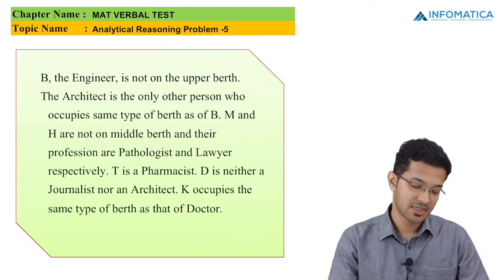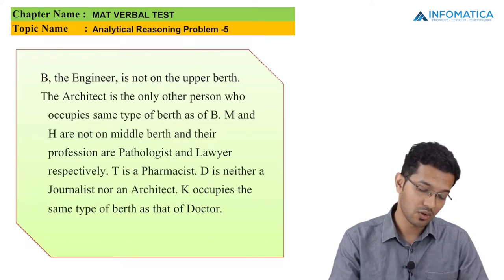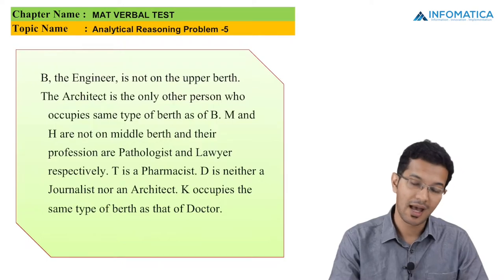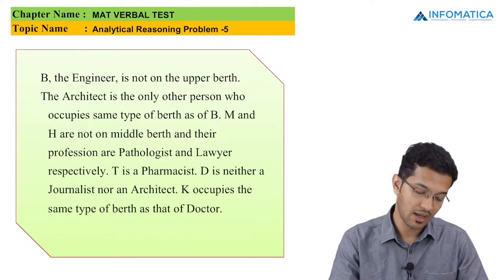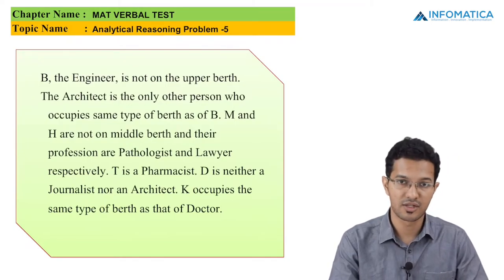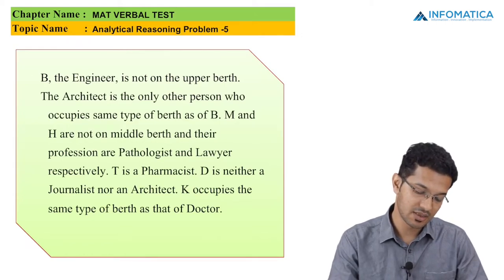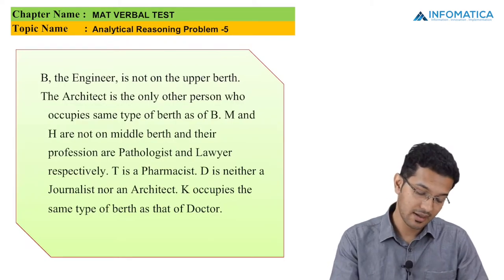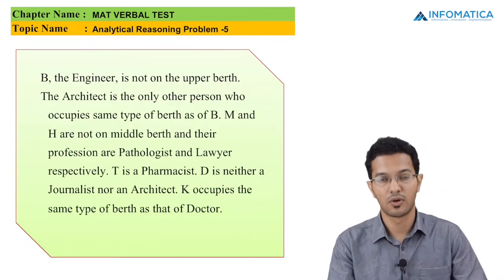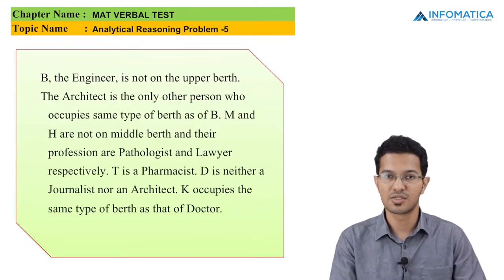The conditions are: B the engineer is not on the upper berth. The architect is the only other person who occupies the same type of berth as B. M and H are not on the middle berth, and their professions are pathologist and lawyer respectively. T is a pharmacist. D is neither a journalist nor an architect, and K occupies the same type of berth as the doctor. Please take a screenshot of this page as well.